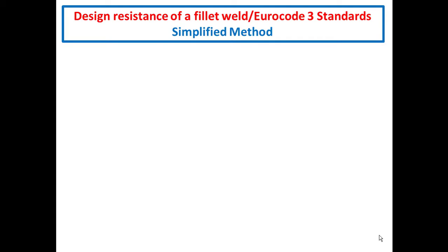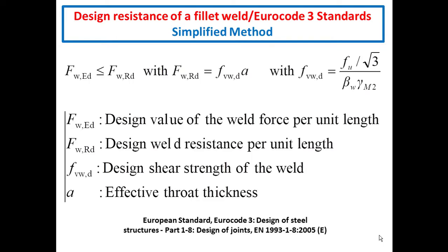The Eurocode 3 standards also presents a simplified method to quickly and simply verify the design resistance of a fillet weld. This method is based on the inequation that the design value of the weld force per unit length must be less than the design weld resistance per unit length. The design weld resistance per unit length is equal to the design shear strength of the weld multiplied by the effective throat thickness. The design shear strength is equal to the nominal ultimate tensile strength FU divided by the square root of 3, and also divided by the correlation factor beta W and the partial safety factor gamma M2.